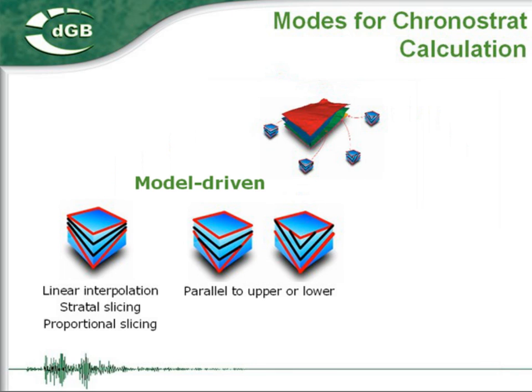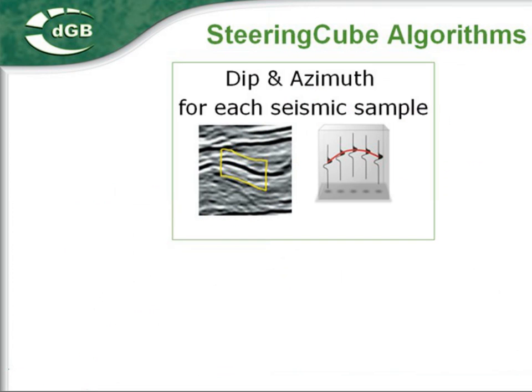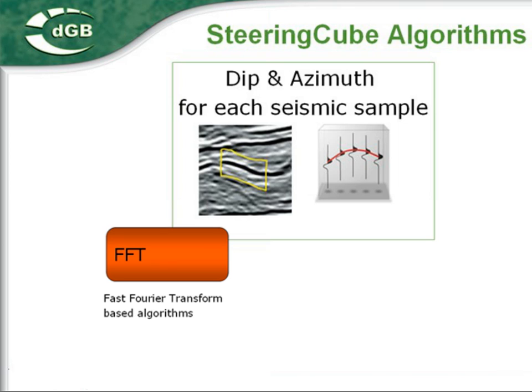The parallel-to-upper option can be used in intervals with onlapping strata, while parallel-to-lower emulates unconformities. In the data-driven mode, the algorithm follows the seismic events everywhere. This mode requires a steering cube with local dip-azimuth information that was generated with OpenDetect's Dip Steering Plugin. The Dip Steering Plugin supports different algorithms to compute the steering cube.